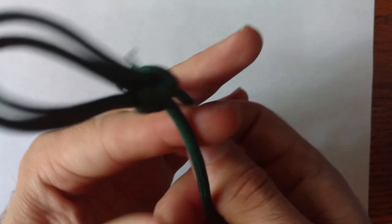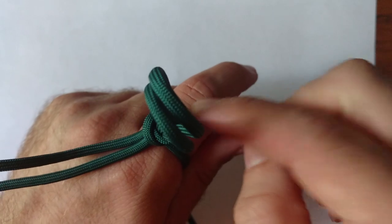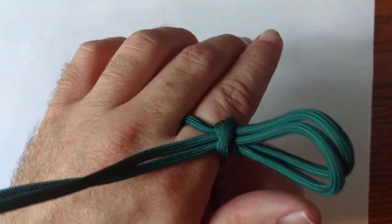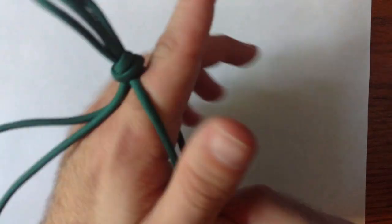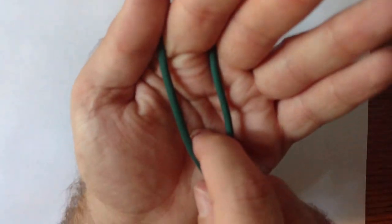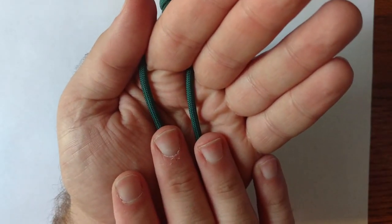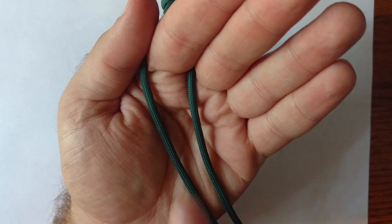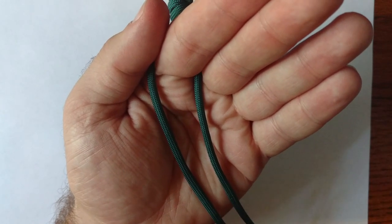We're going to take our anchor knot and slide it over our index finger, and butt it up right here against this index finger. We don't want it off to one side, we don't want it loose. We're going to turn our hand over, and now we've got two cords. I'm using the same color cord here, but you can use different colored cords and get a really interesting pattern.